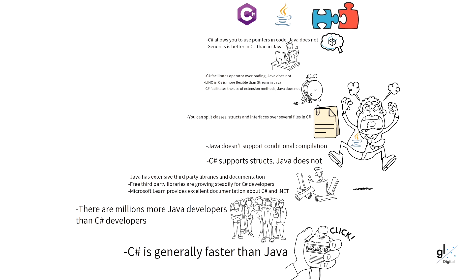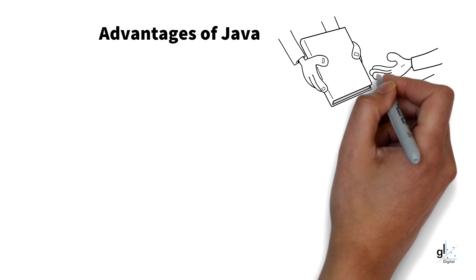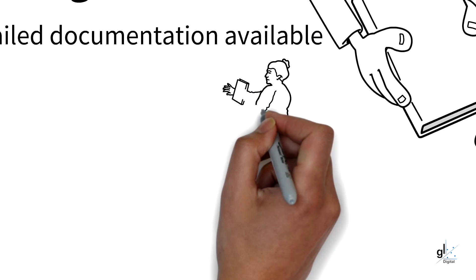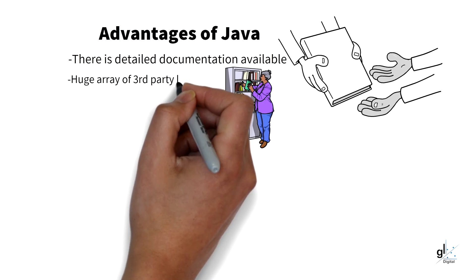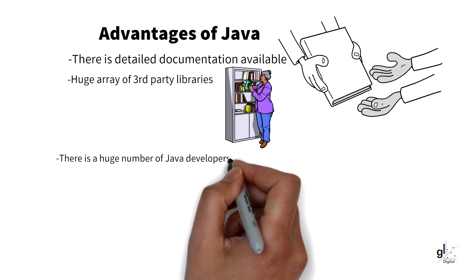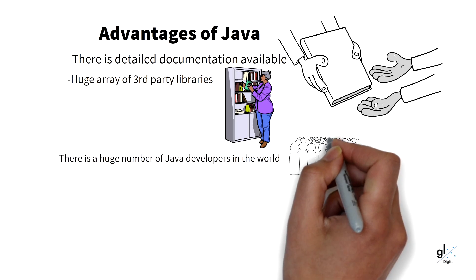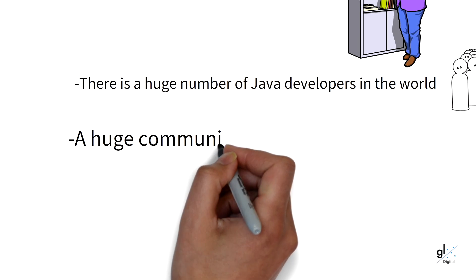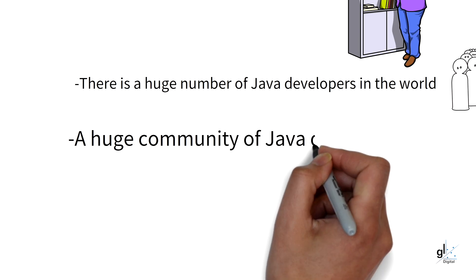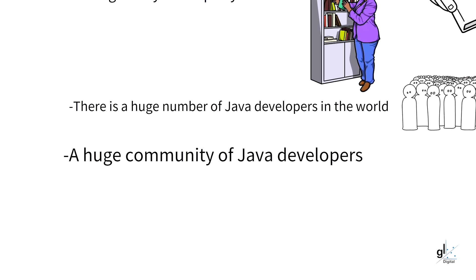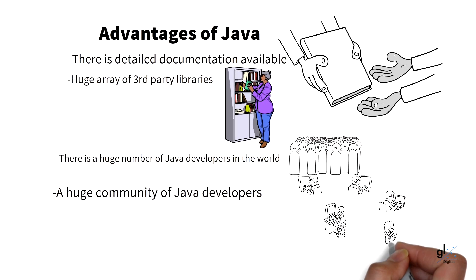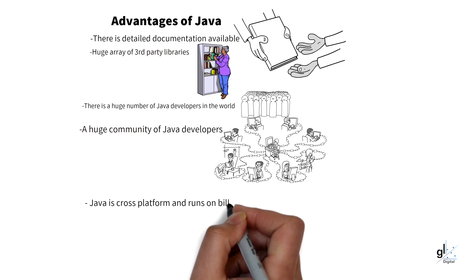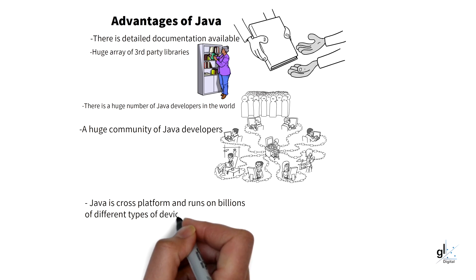Some advantages of using Java are as follows: there is detailed documentation available; there is a huge array of third-party Java libraries; there is a huge number of Java developers in the world — currently many millions more than C-Sharp developers, though that gap is closing. A huge community of Java developers exists that can provide support. Java has been around a long time and is a mature language and platform. You can write once and run anywhere — Java is cross-platform and runs on billions of different types of devices and environments around the world.